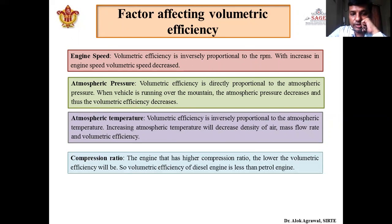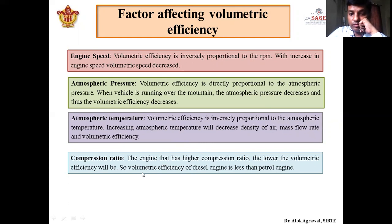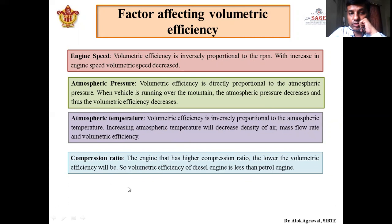Another parameter is compression ratio. An engine with a higher compression ratio will have lower volumetric efficiency — with increasing compression ratio, volumetric efficiency decreases. Since diesel engines have a high compression ratio and petrol engines have a low compression ratio, the volumetric efficiency of a diesel engine is always less than that of a petrol engine. The compression ratio is also dependent upon pressure and temperature.